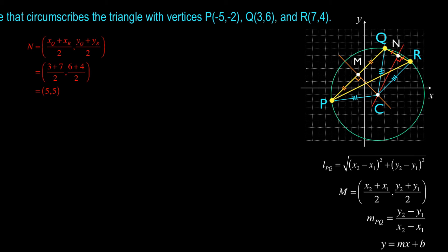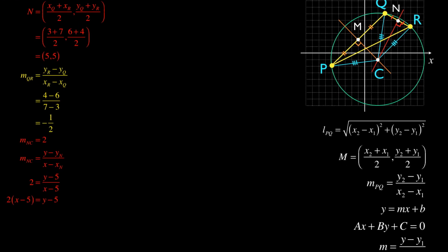N has coordinates (5, 5). The slope of QR works out to be -1/2. So the negative reciprocal of that will be 2. So the slope of NC is 2. Using that slope of 2 and the point (5, 5) in the point slope form of a line, I get that 2(x - 5) = y - 5.